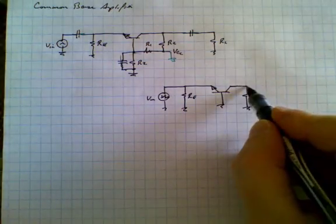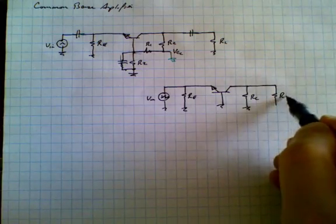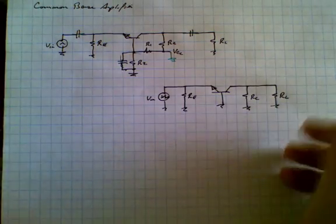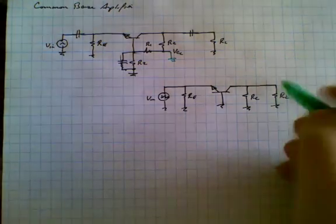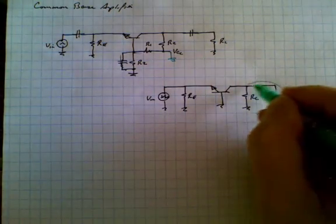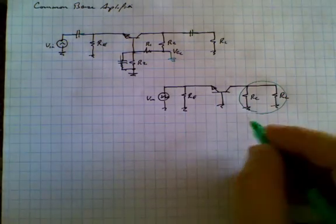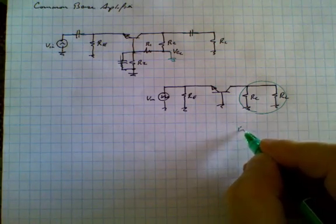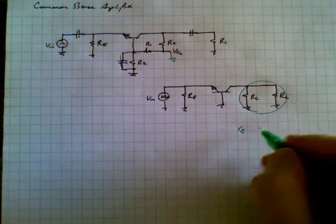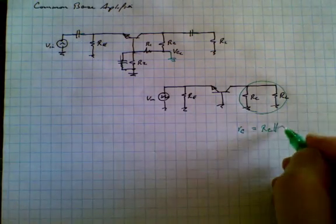And of course, outside of the circuit, we have our RL, the load resistance. Now, as far as the collector is concerned, the collector sees both of these as an AC source or AC load. And so we can combine these into a single resistor and call it R subscript small c. And what this really is is a parallel combination of RC and RL.